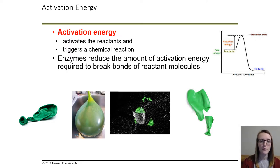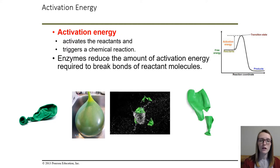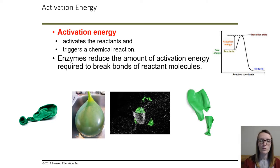For example, we have our balloon, which represents our reactants, and we're going to fill our balloon up with water, where the water represents energy. We want our final product to be the broken pieces of the balloon. After we fill the balloon up, we need to make sure it passes the threshold so it bursts. Without a catalyst or enzyme, we will need a lot more water to break this balloon. However, if we have an enzyme, we equate that to it being a water balloon — the balloon will be smaller, so it will require less water or less energy to start the reaction and get our products.